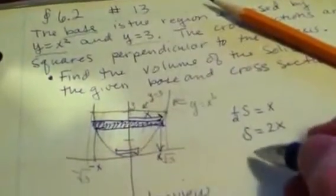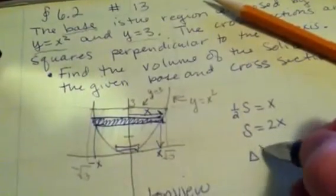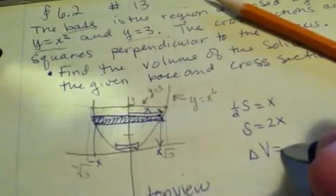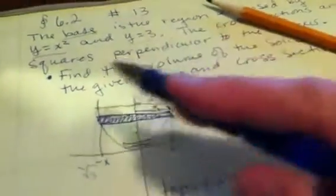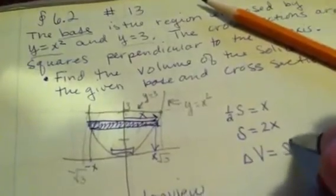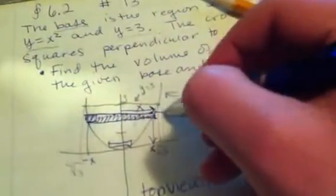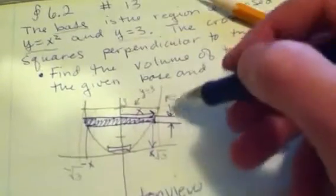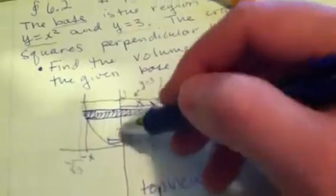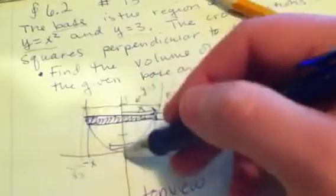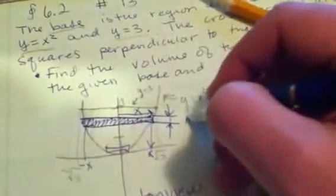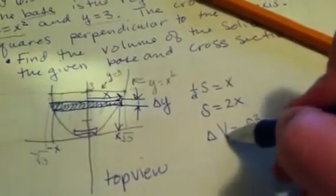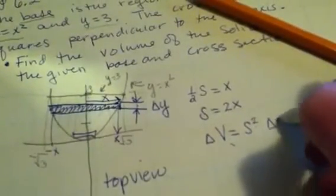Now it's going to come up and out of the paper. Your delta volume is going to equal the area of the square, which is side squared, times the thickness. If you notice, this thickness right here of this cross-sectional area is a very small portion of the y-interval, of the y-axis, so we call this delta y. Now we have delta V, or the small volume, is equal to side squared times delta y.